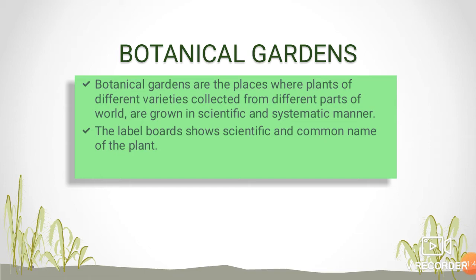Botanical gardens can show labels for each plant. The label contains both the scientific name and the common name. The scientific name is the formal name given by scientists, while the common name is what the plant is called by local people in different parts of the world.